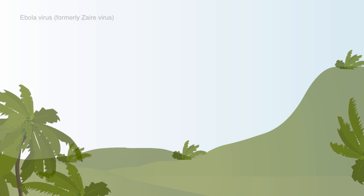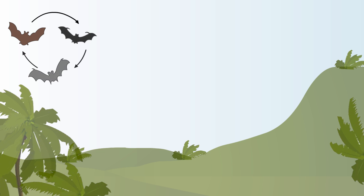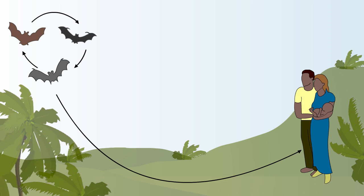The virus can be found in a number of bat species, though the bats themselves do not show signs of the disease — they merely spread the virus from one bat population to another. Ebola does not yet infect humans at this stage in the lifecycle, though it is possible for humans to be exposed to the Ebola virus directly from bats. This doesn't seem to be a regular method of exposure.